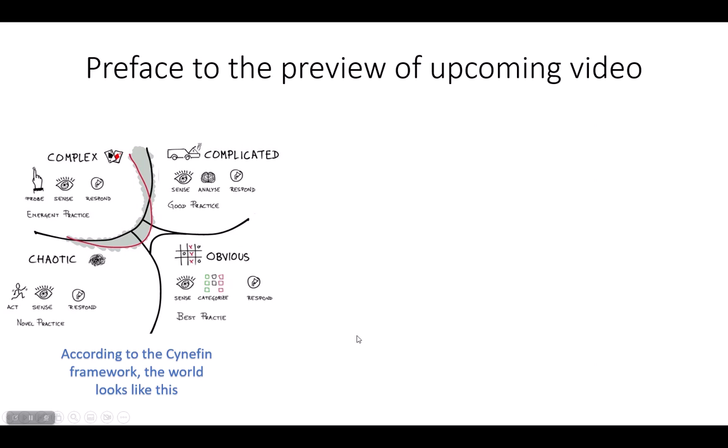What does the world look like? This is the Cynefin framework and it contains four parts: obvious and clear, complicated, complex, and chaotic. There are some practices - best practice, good practice, emergent practice, and novel practice. In order to understand the world, we should cover all these phases.